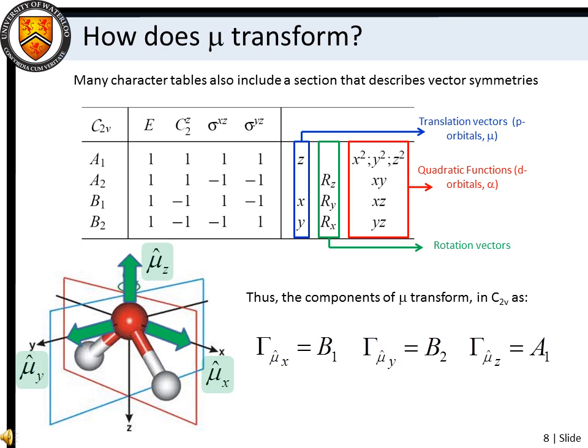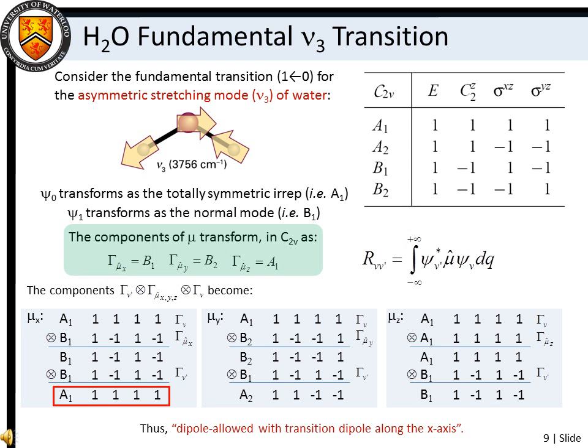For example, under the C2V symmetry group, a vector along the z-axis has A1 symmetry, a vector along the x-axis has B1 symmetry, and a vector along the y-axis has B2 symmetry. In determining the direct products for the x, y, and z components of the dipole, we find that the water asymmetric stretch fundamental vibrational transition is dipole allowed along the x-axis. Thus, the transition is IR active, with a transition dipole moment that is perpendicular to the principal symmetry axis.